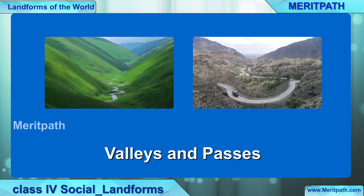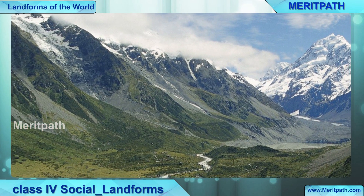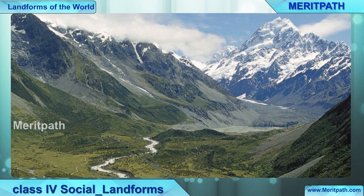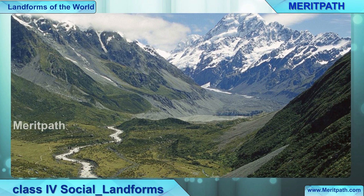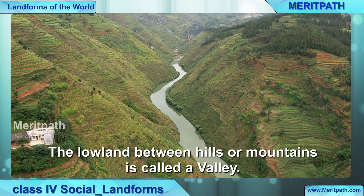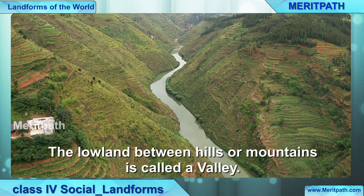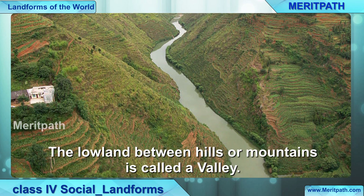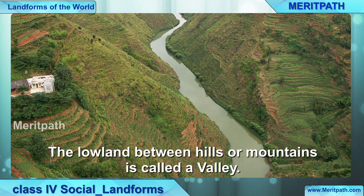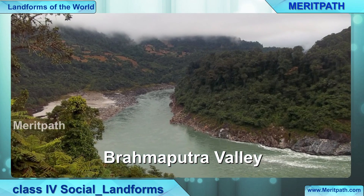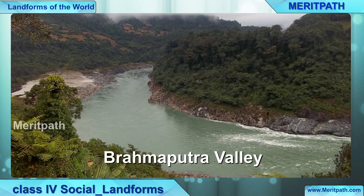Now we will learn about valleys and passes. What are valleys? The low land between the hills or mountains is called a valley. It is usually formed by glaciers or rivers wearing away rocks or mountains. Some valleys have rivers flowing through them. For example, the Brahmaputra Valley.